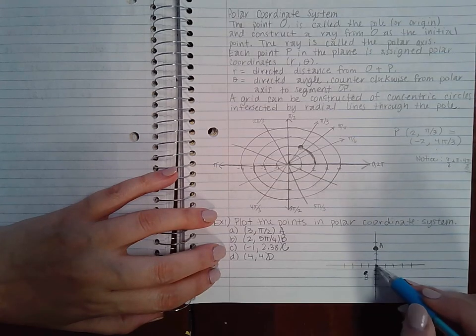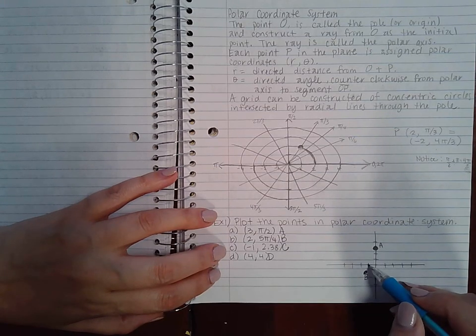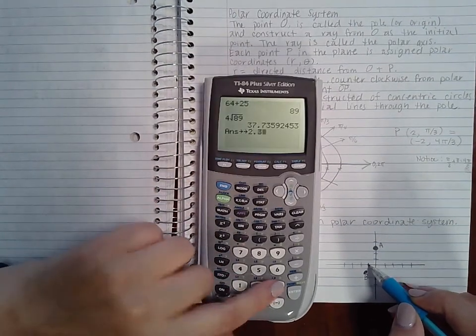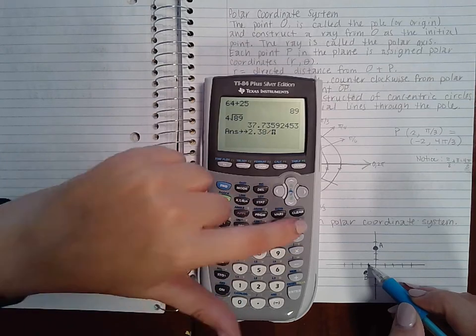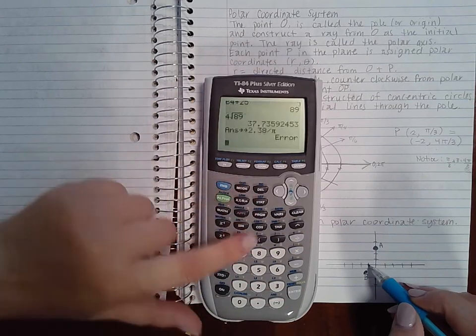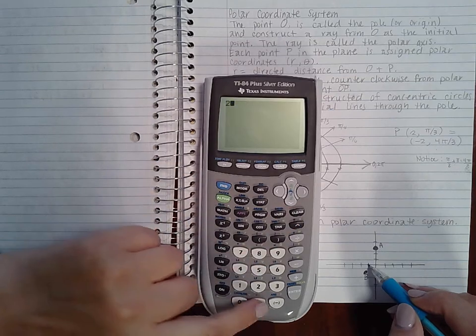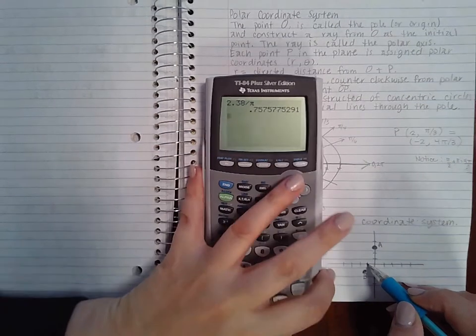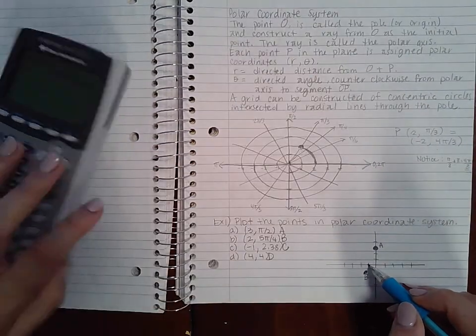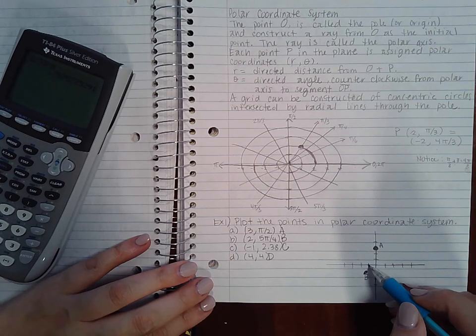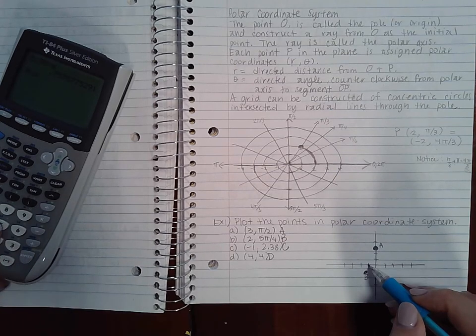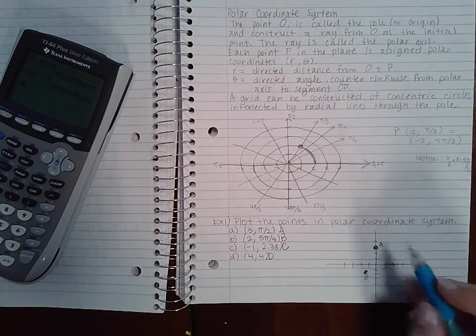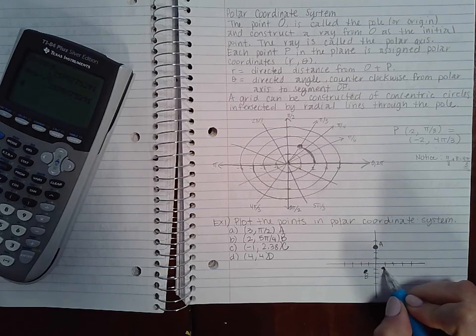For C, I'm going to go negative 1, which means in this direction, and then 2.38. Now that's in radians. 2.38 divided by π. It's about three-fourths of a π. So if I keep going in this direction, I'm going to go one-fourth, two-fourths, three-fourths of a π. So I end up with a point about there.